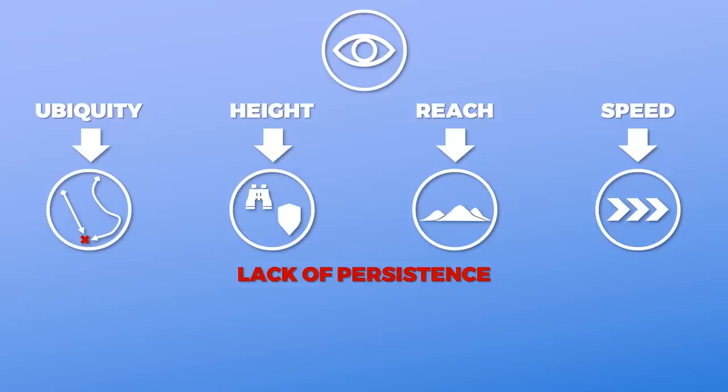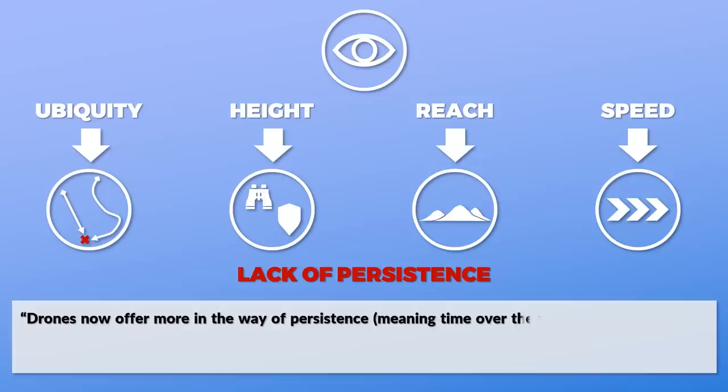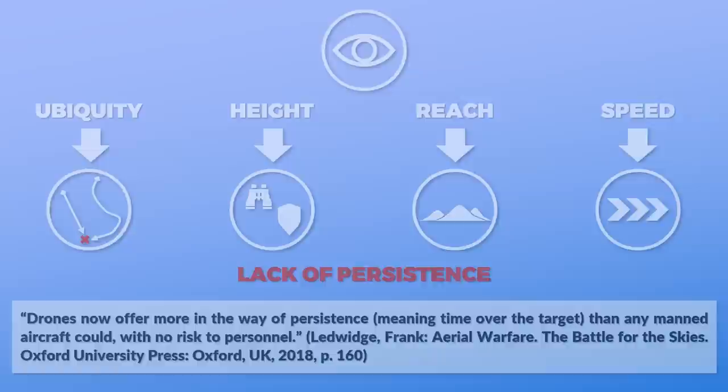Although in recent years this has changed. Drones now offer more in the way of persistence — meaning time over the target — than any manned aircraft could, with no risk to personnel. The main functions of intelligence and situational awareness are finding the enemy, gathering information on him, and providing targeting parameters on the tactical, operational, and strategic level.